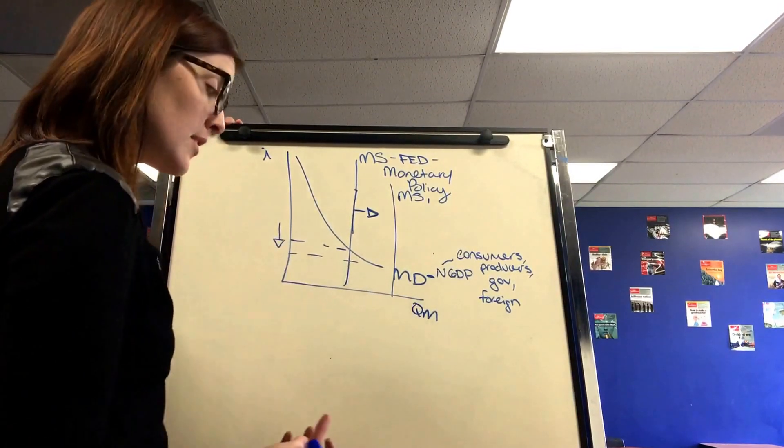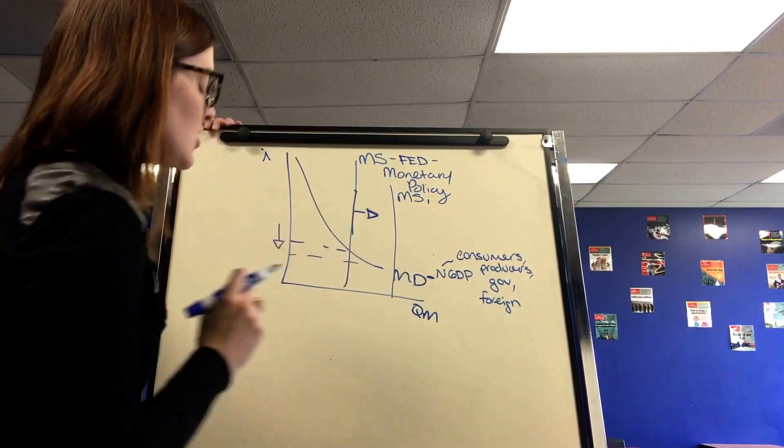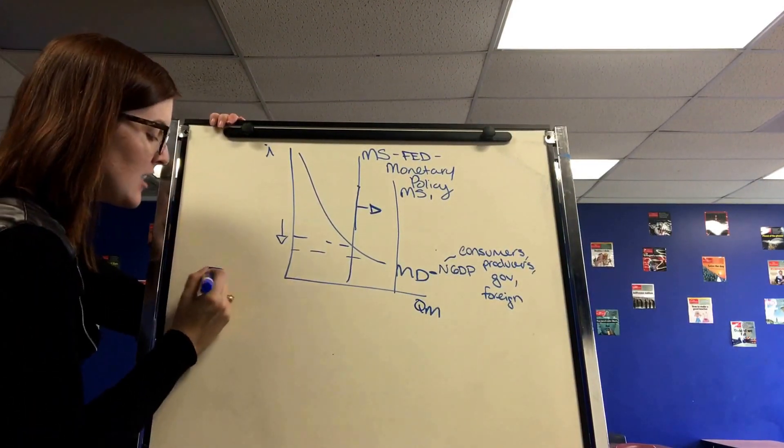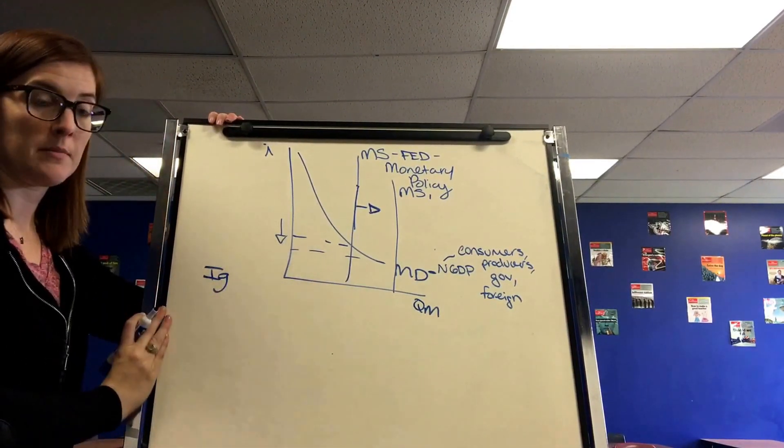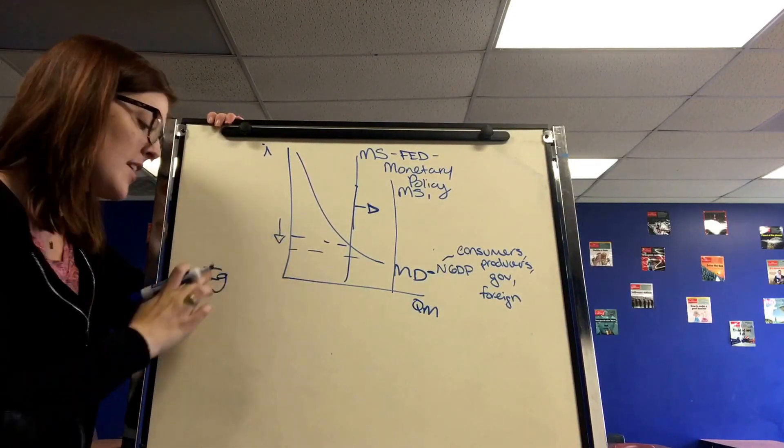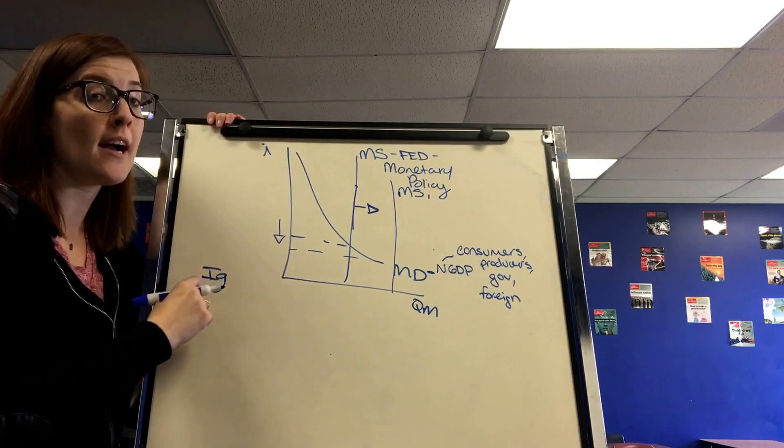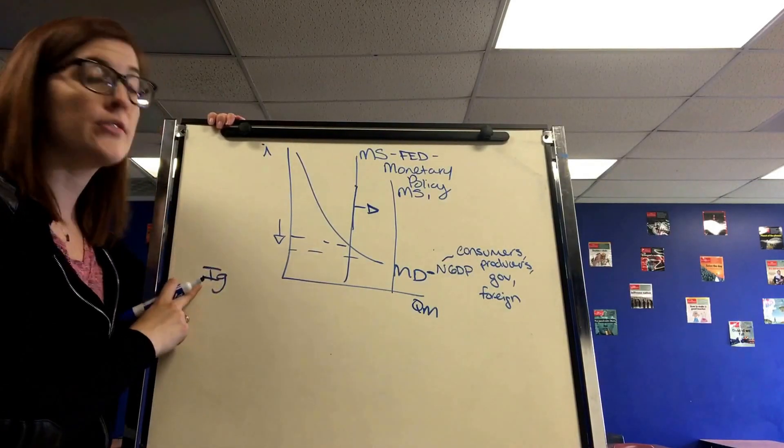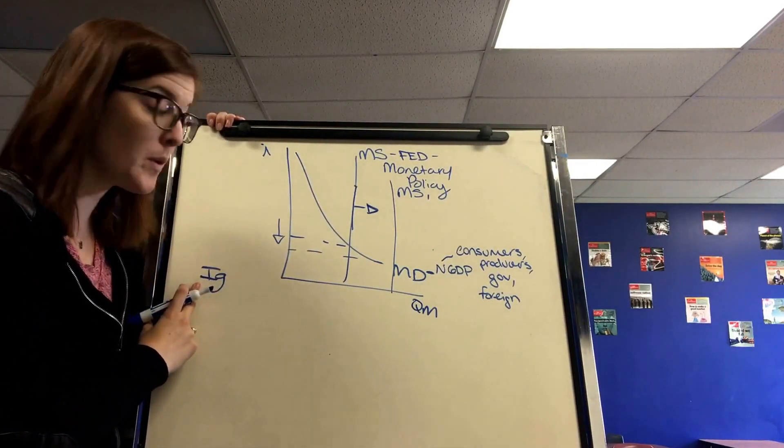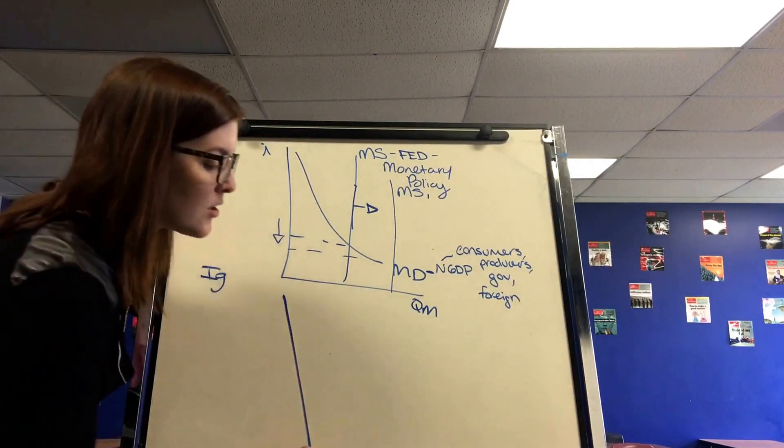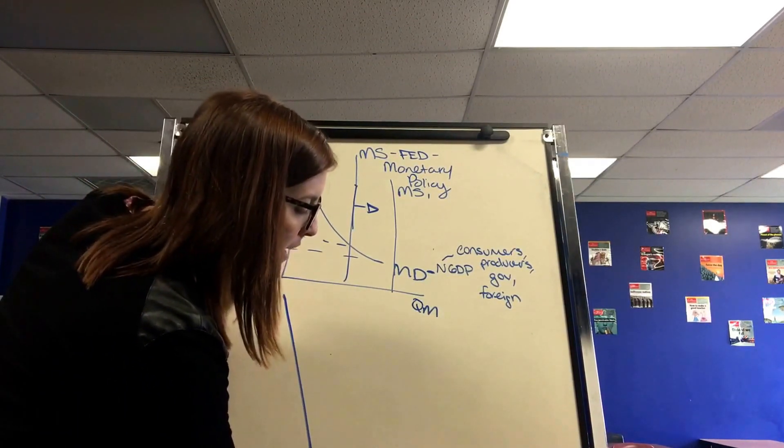Now the whole point of decreasing nominal interest rates is changing one component of GDP, the IG, gross private investment. Because when interest rates change, it affects inventory, physical capital, and whether or not we want to buy a house. Remember, IG's from the perspective of the borrowers. We want low interest rates. That's what encourages investment.